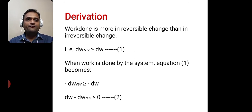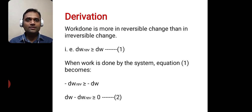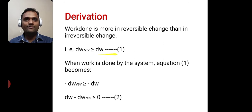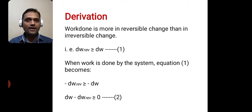Now we have to study the derivation of this Clausius inequality. For that we have to consider the work done in reversible process as well as in irreversible process. It is well known that the work done in reversible change is more than in irreversible change. That is, dW reversible is greater than or equal to dW, where dW reversible is the work done in reversible process while dW is the work done in irreversible process.